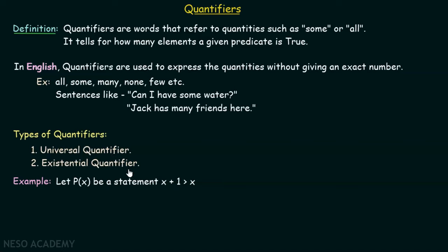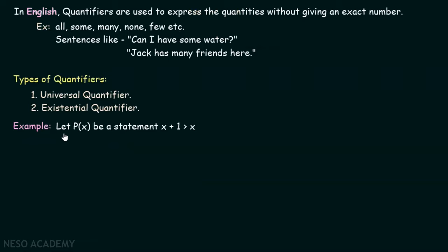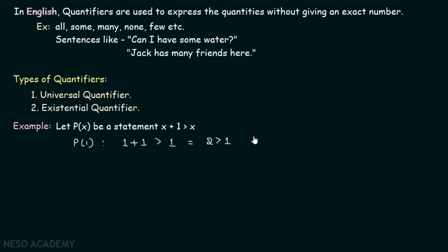Let's consider an example to understand how quantifiers work in mathematics. Let p(x) be the statement x + 1 > x. What is the truth value for p(1)? Replacing x with 1 gives us 1 + 1 > 1, which equals 2 > 1, and this is true. So the truth value of p(1) is true. What about p(2)? p(2) gives us 2 + 1 > 2, which equals 3 > 2, and this is also true.